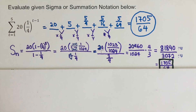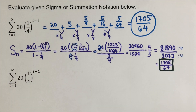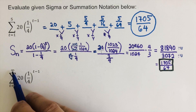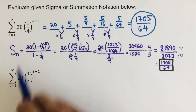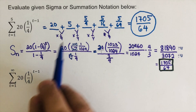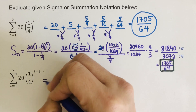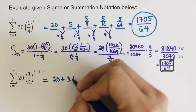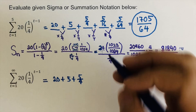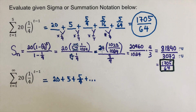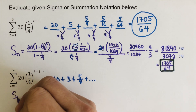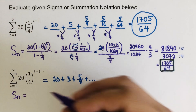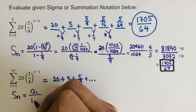Now let's do the last example. This is an infinite geometric series because it has an infinity symbol on top — it doesn't stop at five but goes to infinity. We write out: 20 + 5 + 5/4 and then three dots, meaning it doesn't end. The formula for the sum of an infinite geometric series is A sub one over (1 minus r).